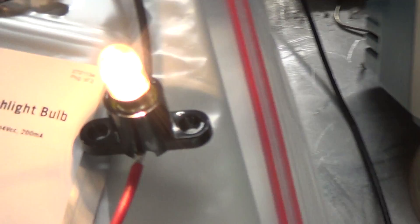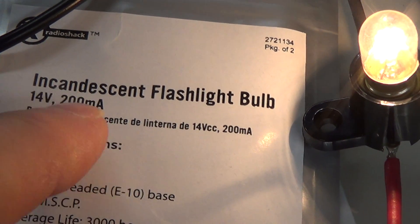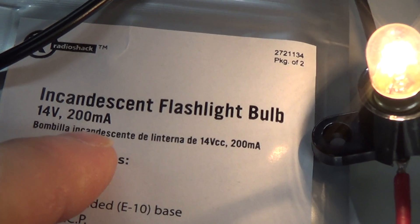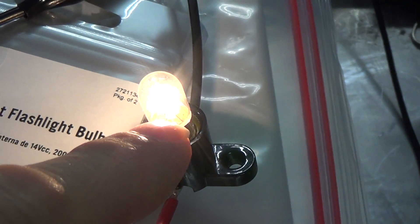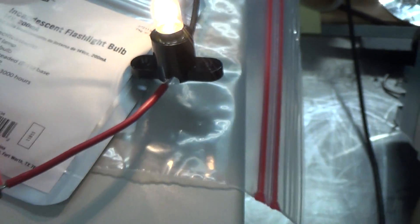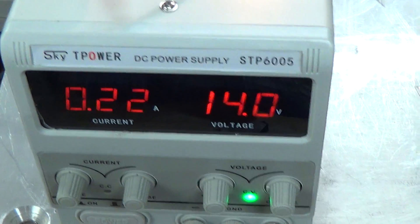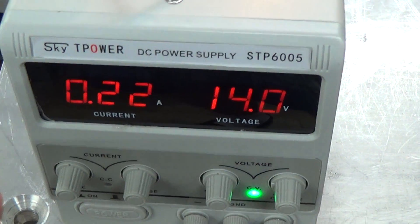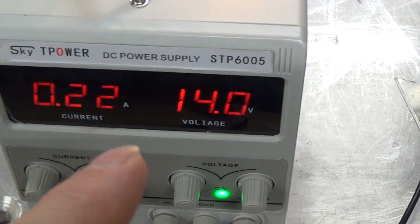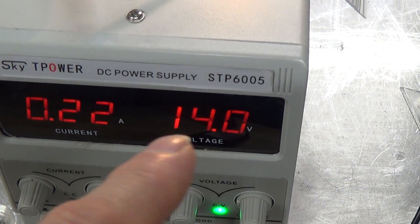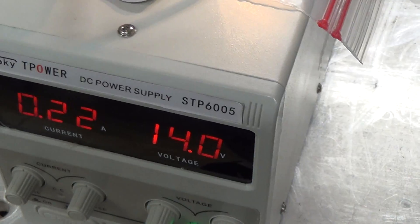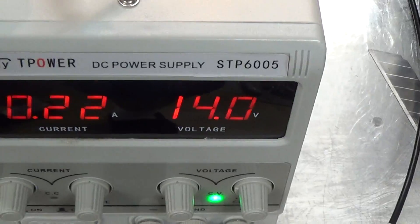These are flashlight bulbs, 14 volts, 200 milliamps. There is the bulb lit there with 14 volts. This is just as a reference, rough reference. We got about 3 watts basically dissipating there, so 14 volts at 220 milliamps, that is 3 watts.